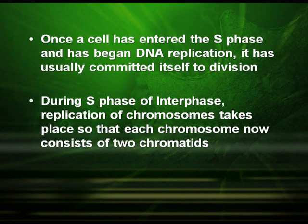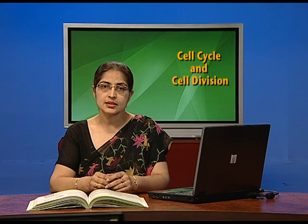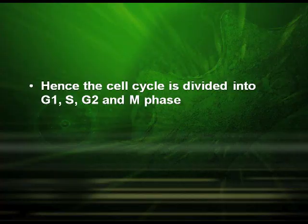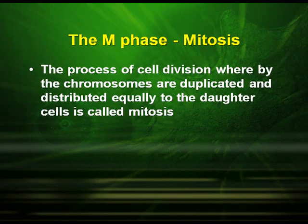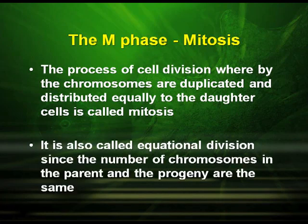During the S phase of interphase, replication of chromosomes takes place so that each chromosome now consists of two chromatids. Following this, the cell enters into the M phase. Hence, the cell cycle is divided into G1, S, G2, and M. The M phase or mitosis is the process of cell division whereby the chromosomes are duplicated and distributed equally to the daughter cells. It is also called equational division, since the number of chromosomes in the parent and the progeny are the same.